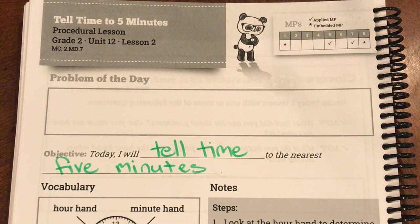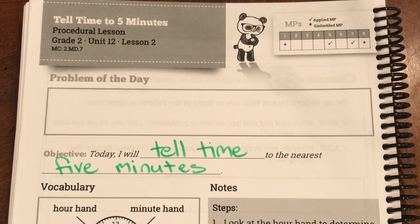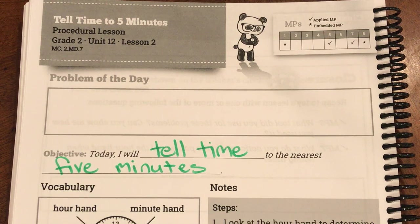So boys and girls, what does this really look like? Well when you were in first grade last year you learned to tell time to something that we call the half hour, but we're going to be more specific now and we're going to tell time to the nearest five minutes.